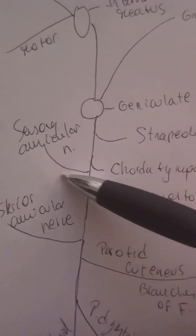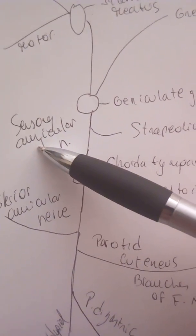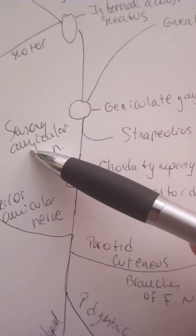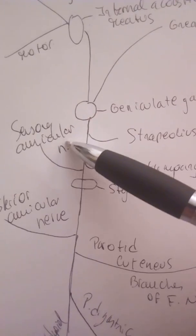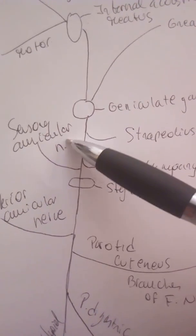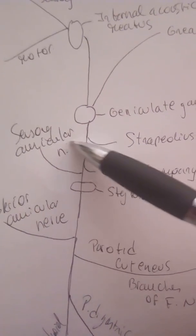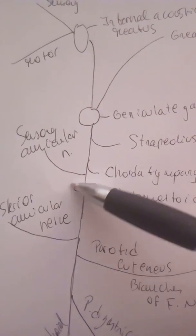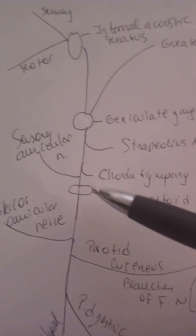Then we'll go the sensory auricular nerve that will innervate some skin of the external acoustic meatus and external ear. Then after that we'll cross the stylomastoid foramen.